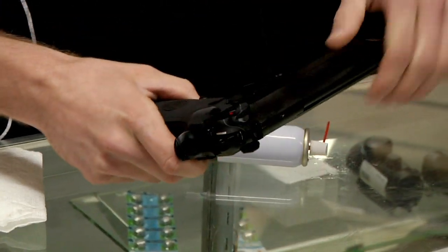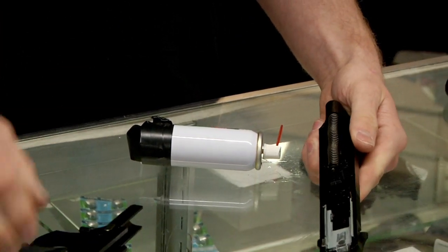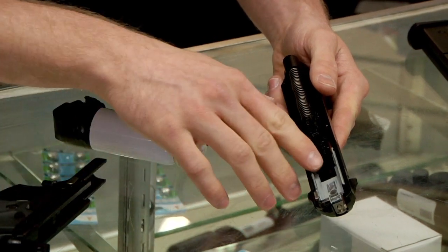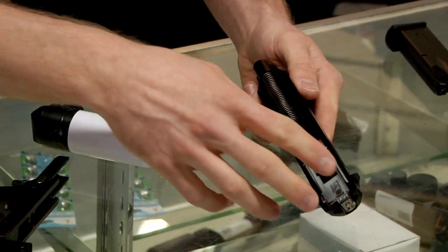Go ahead and break your slide off from the rest of the gun. You want to make sure that your gun's well oiled on the track itself and where the seals meet, so right here, along here.